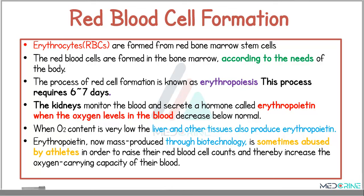Erythrocytes, or red blood cells, are formed from the red bone marrow stem cells and are formed according to the needs of the body. The process of red cell formation is known as erythropoiesis, and this process requires between six to seven days to complete. The kidneys monitor the blood and secrete a hormone known as erythropoietin when oxygen levels in the blood decrease below normal. When the oxygen content is very low, the liver and other tissues also produce erythropoietin hormone.